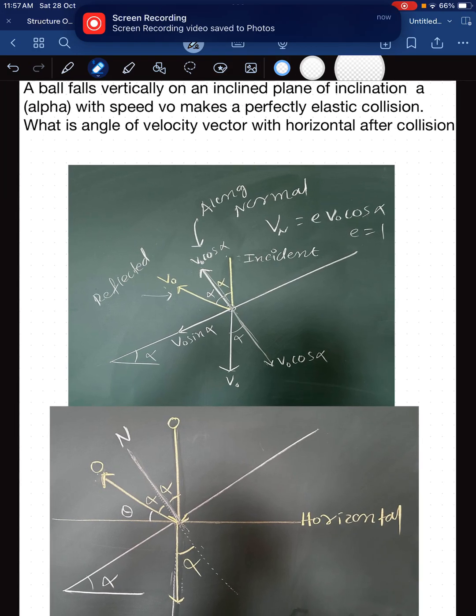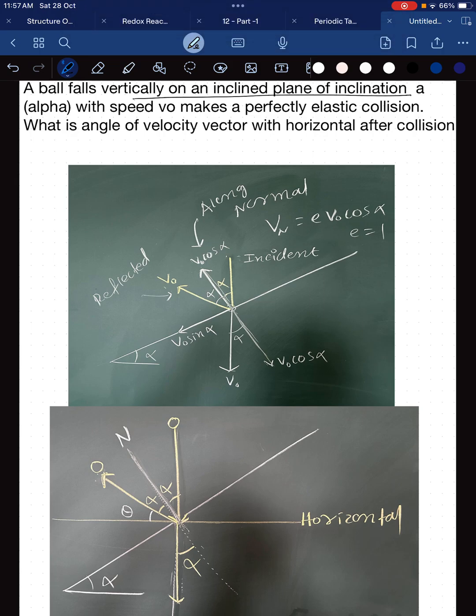In this question, it is asked that a ball falls vertically on an inclined plane of inclination alpha with a speed v naught makes a perfectly elastic collision. What is the angle of velocity vector with the horizontal after collision?